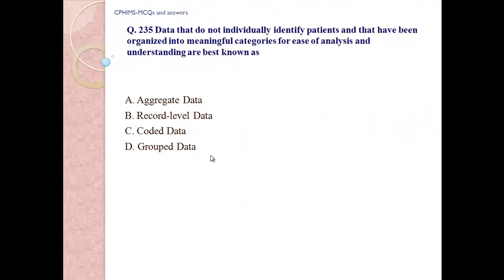Question number 235: Data that do not individually identify patients and that have been organized into meaningful categories for ease of analysis and understanding are best known as: a) Aggregate data, b) Record-level data, c) Coded data, d) Grouped data.